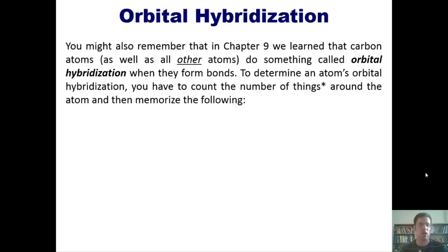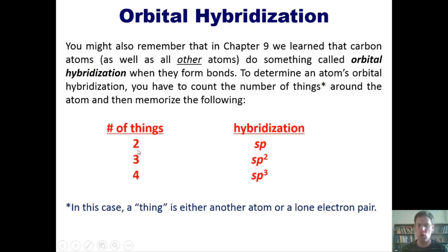You might also remember from chapter 9 that carbon atoms do orbital hybridization when they form bonds. To determine an atom's orbital hybridization, count the number of things around the atom - either another atom or a lone electron pair. If the number is 2, the hybridization is sp. If it's 3, then it's sp2. If it's 4, then it's sp3.